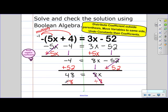So 48 divided by 8 is going to give me 6. And then I'm left with x on this side.